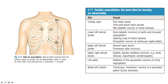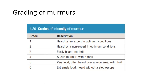Grading intensity of murmurs, grade 1 to 6: Grade 1 is heard only by an expert in optimum conditions. Grade 2 is heard by a non-expert in optimum conditions. Grade 3 is easily heard but there's no accompanying thrill. Grade 4 is a loud murmur with a thrill. Grade 5 is very loud, often heard over a wide area with a thrill. Grade 6 is extremely loud, even heard without a stethoscope. By definition, systolic murmurs are graded 1 to 6 and diastolic murmurs 1 to 4.